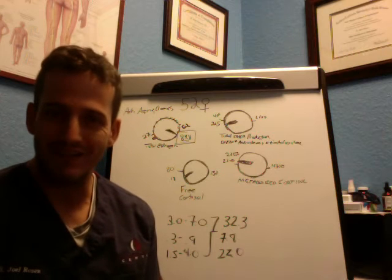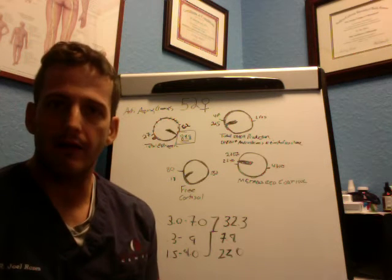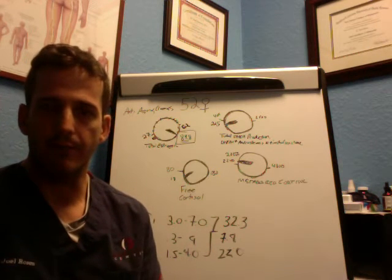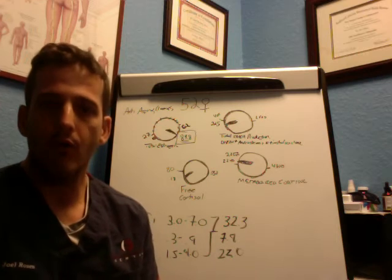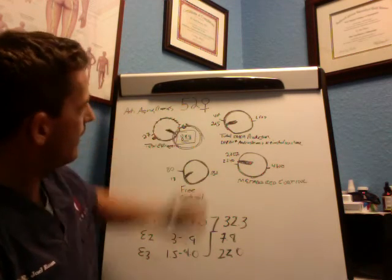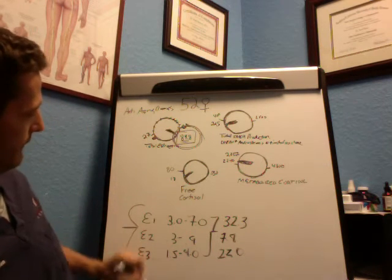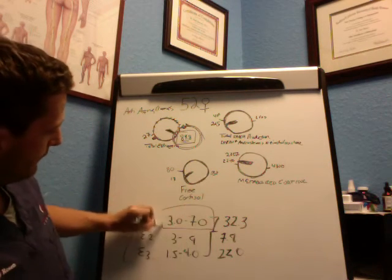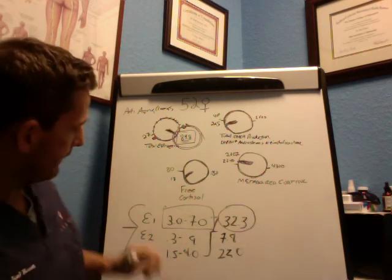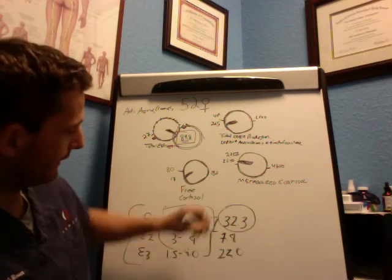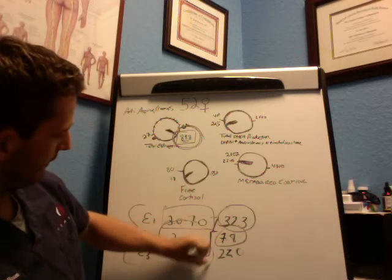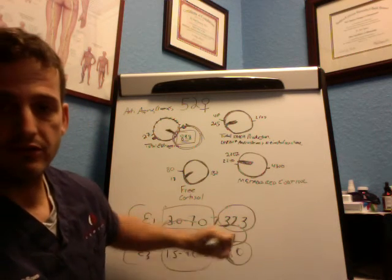These anti-aging creams have hormones in it. If we're talking about like a Clinique or some kind of facial cream that you put on that has and that's anti-aging, that has hormones in there and that is causing her to go super high. When we look at the breakdown of E1, E2 and E3 for a post-menopausal female, she should be between 3 and 7 and she's 32.3. For E2, she should be between 0.3 and 0.9 and she's 7.8. For E3, she should be 1.5 and 4.0 and she's 22.